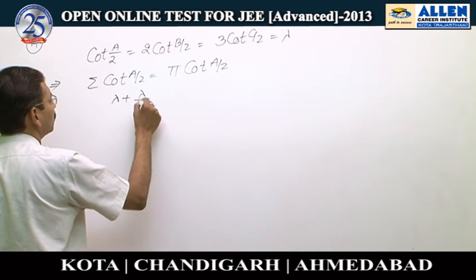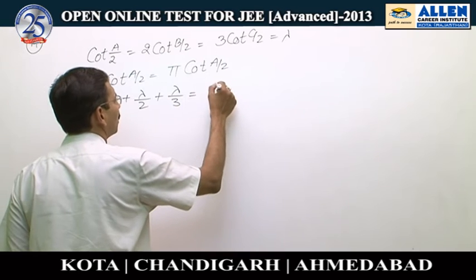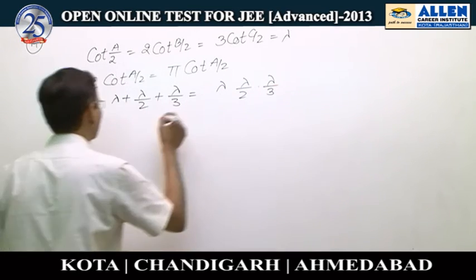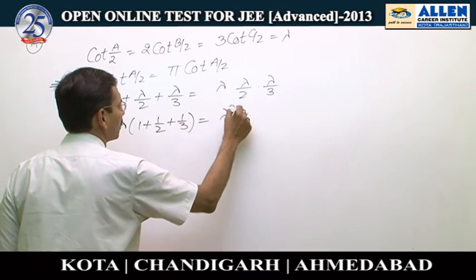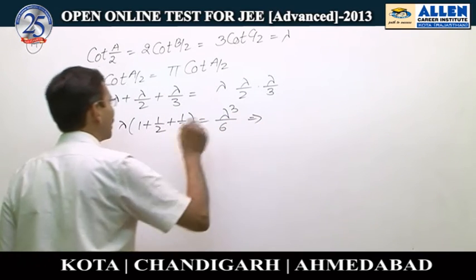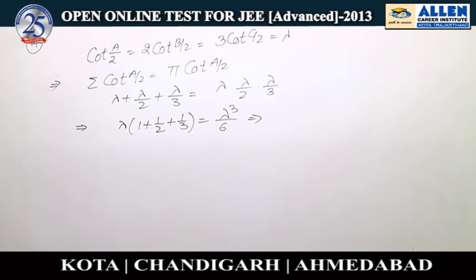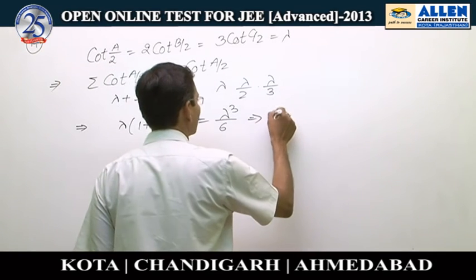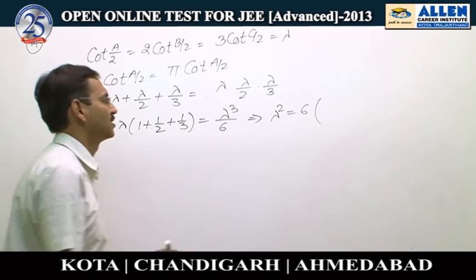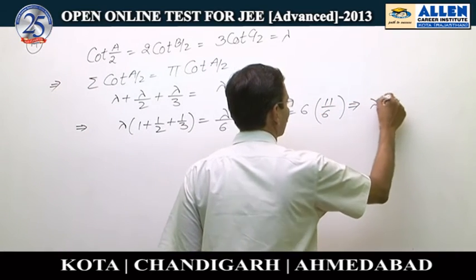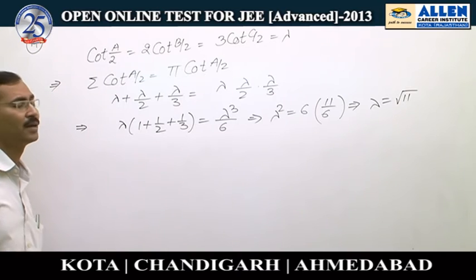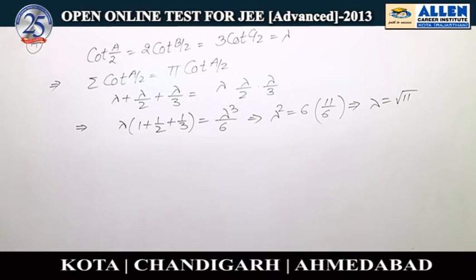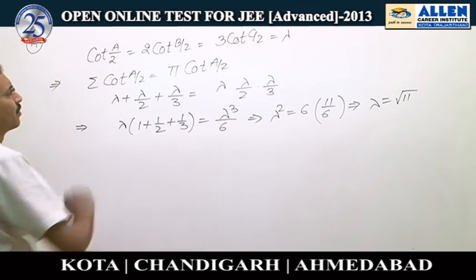So: lambda plus lambda/2 plus lambda/3 equals lambda · (lambda/2) · (lambda/3). This simplifies to lambda(1 + 1/2 + 1/3) = lambda³/6. Cancelling one lambda (since lambda ≠ 0, as all cotangents cannot be zero simultaneously): lambda² = 6 × (11/6) = 11. Therefore lambda equals root 11. Lambda cannot be negative since A/2, B/2, C/2 are acute angles, making all cotangents positive. Thus cot(A/2) = √11, cot(B/2) = √11/2, cot(C/2) = √11/3.